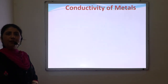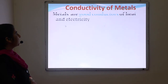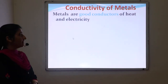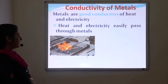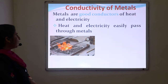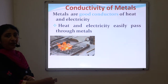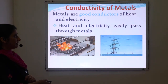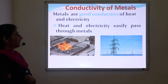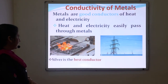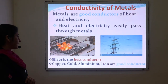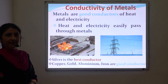The fourth physical property is conductivity of metals. Metals are good conductors of electricity and heat, meaning heat and electricity easily pass through metals. For example, when we heat one end of an iron rod, after some time the other end of the rod becomes hot — meaning heat flows from the hot part to the cold part. Also, electric wires are made up of metal, through which electricity passes from the main tower to different places. Among the various metals, silver is the best conductor, whereas copper, gold, aluminum, and iron are also good conductors of electricity and heat.